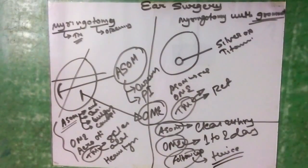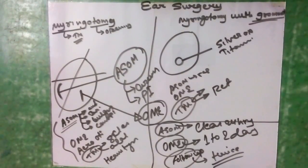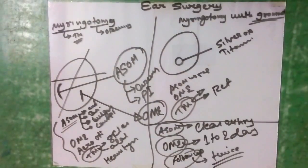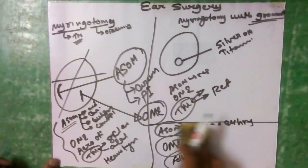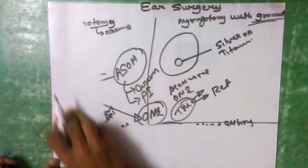Complications of myringotomy and grommet insertion include myringosclerosis, tympanic membrane perforation, atrophy, retraction pocket formation, grommet migration from its original position, and anesthesia-related problems. This covers all of myringotomy and myringotomy with grommet insertion.